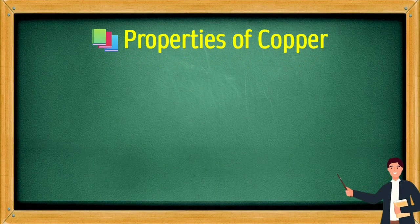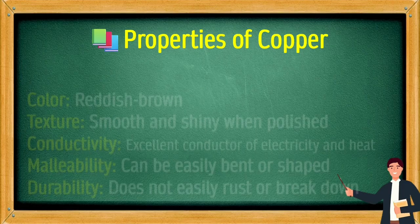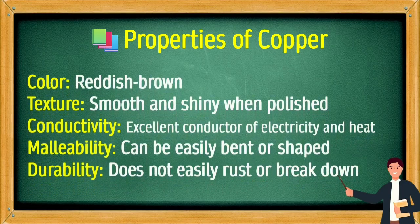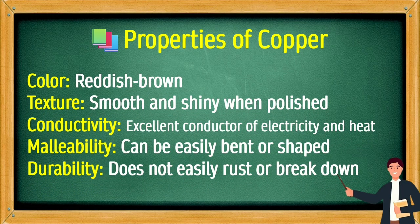Properties of copper: Color — reddish-brown. Texture — smooth and shiny when polished. Conductivity — excellent conductor of electricity and heat. Malleability — can be easily bent or shaped. Durability — does not easily rust or break down.